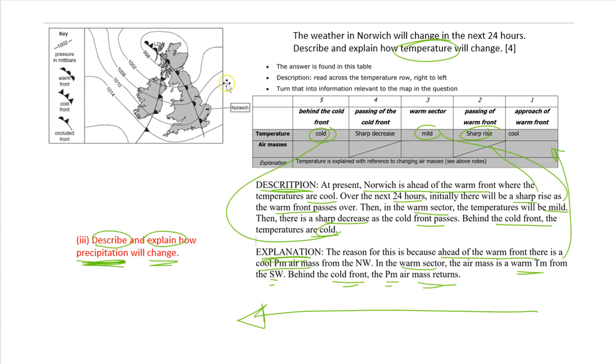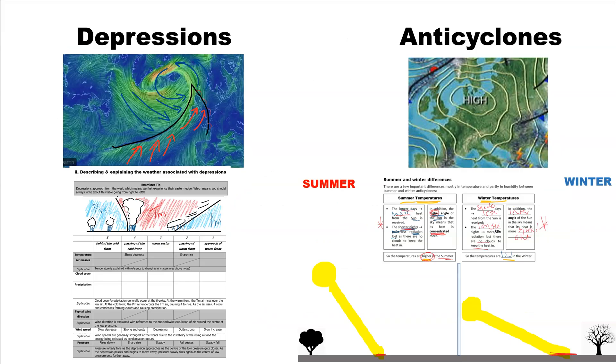Now, if you get a question about this in the exam, what you need to do is to identify which aspect of the weather that you're going to be asked about. Then you need just to kind of visualize this in your head. In this case, your temperature, you read across for your description. You've got to explain here. You'll read across for your explanation as well for that one. So that's the passage of a depression and the weather it brings.